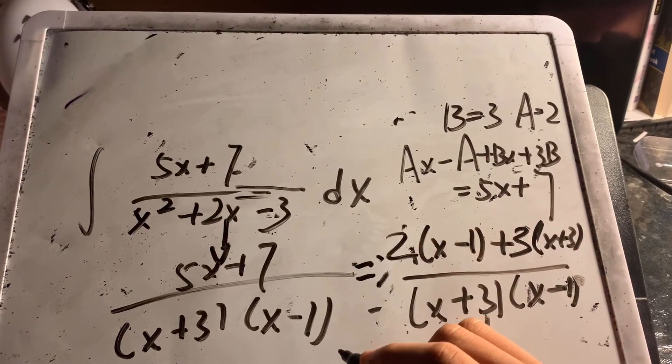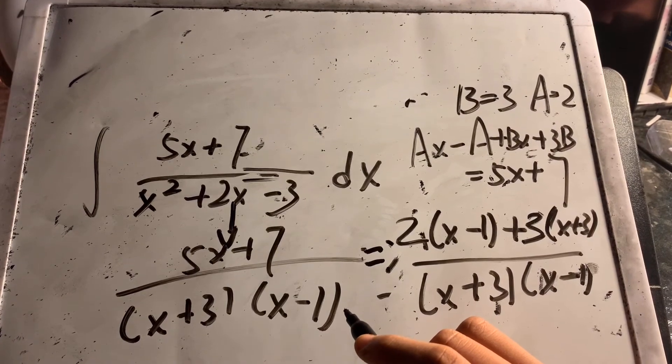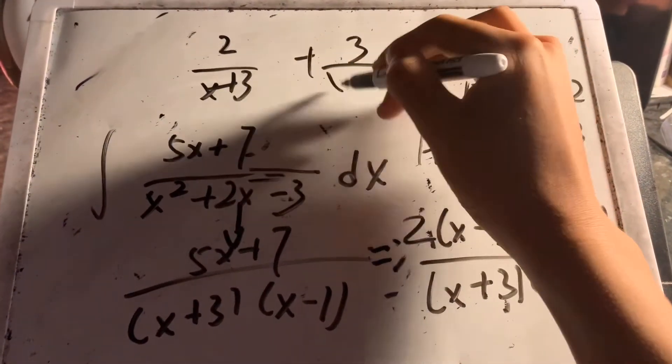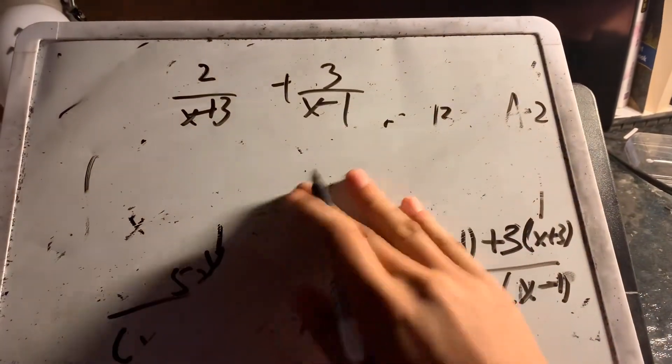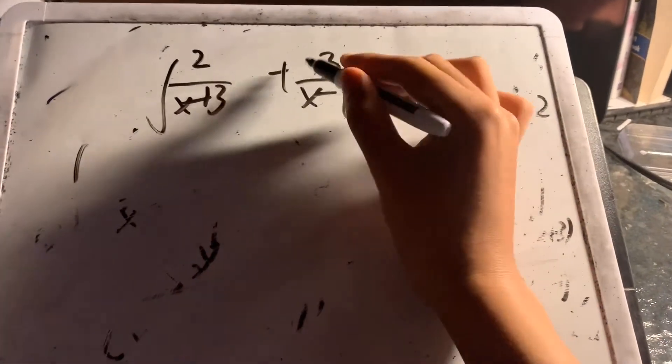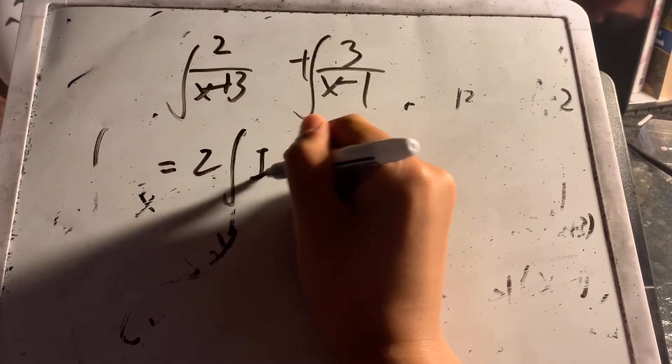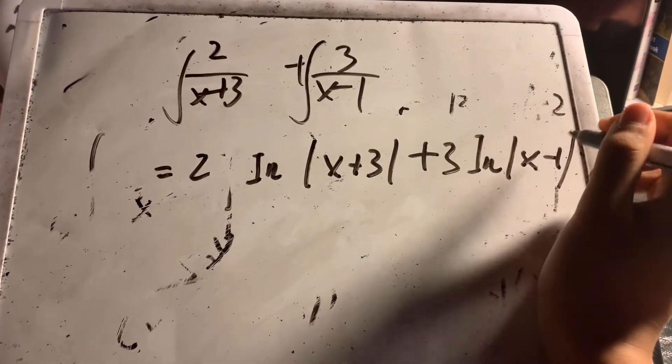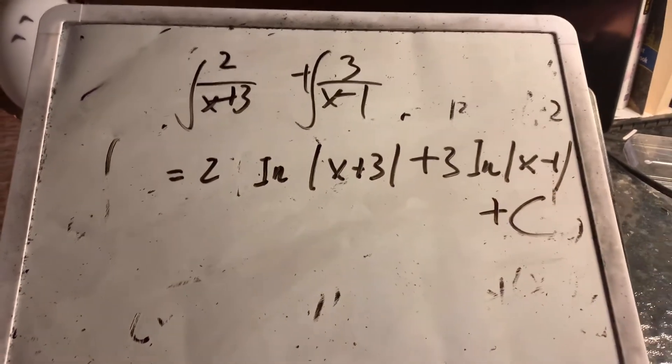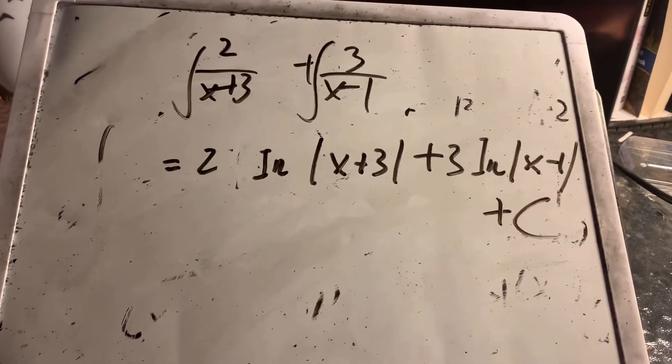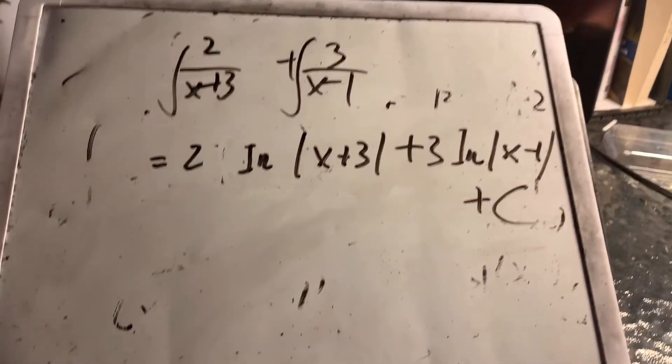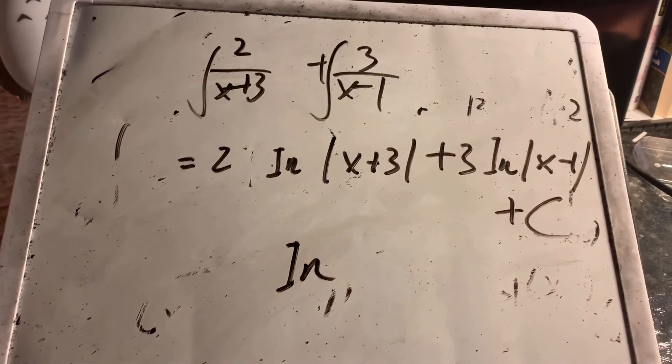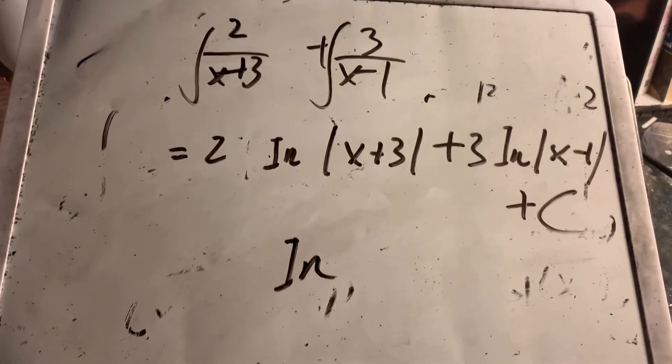In this case, you get B is 3 and A is 2. Let's separate it. Since we know A is 2 and B is 3, we separate it into ∫2/(x-1) dx plus ∫3/(x+3) dx. Then you just add the integration sign to both sides and you get 2 ln|x-1| plus 3 ln|x+3| plus C, and you are done.